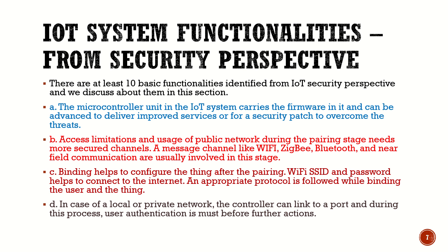Third point: binding. Binding helps us configure the thing — the component — after pairing. The Wi-Fi SSID and password help us connect to the internet. An appropriate protocol must be followed while binding the user and the thing. Pairing happens first, and then binding happens, so we need an appropriate protocol which can help us while binding the user and the thing.